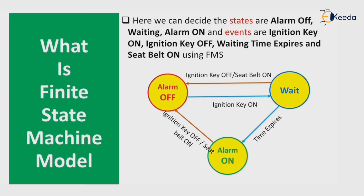If the seat belt is on, it will automatically shut off the alarm. The second case is: if the ignition key is on, it will wait in the wait state until the seat belt is on. If, before the time expires, within the time, the seat belt is on, it will move to the alarm off state. In that way, the finite state machine model works.